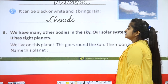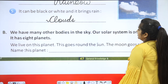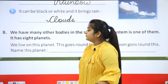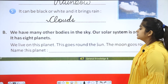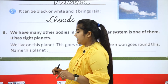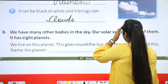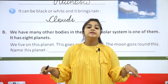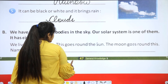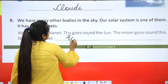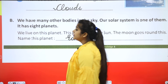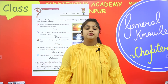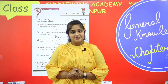We have many other bodies in the sky. And the moon goes around this — which planet is it? Earth. The moon goes around the Earth, and you should have this knowledge about our universe. Hope you all have understood. Thank you.